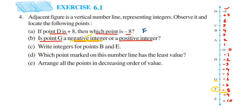The third question asks: write integers for points B and E. Point B is located here and the integer at that position is 4. Point E is located at the bottom of the number line, which is minus 10. So for point B the answer is 4, and for point E the answer is minus 10.